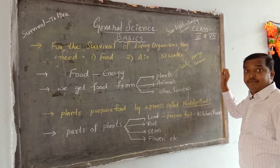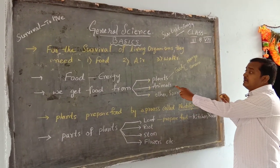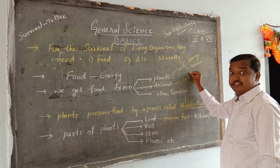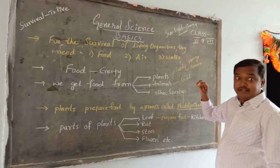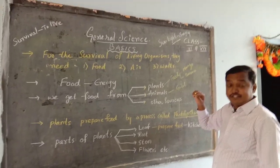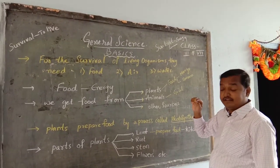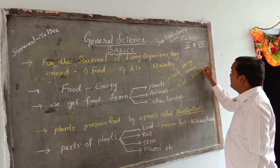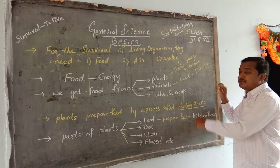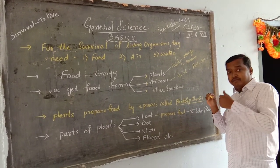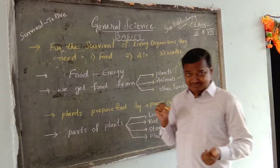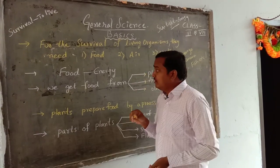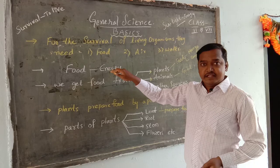From animals we get food like goat — mutton — chicken, fish, and so on. There are also other sources including some junk foods. So in order to get energy, living organisms need to eat food from these various sources.